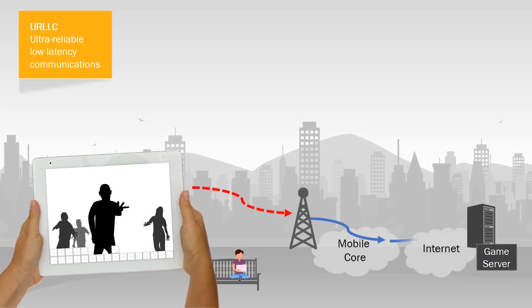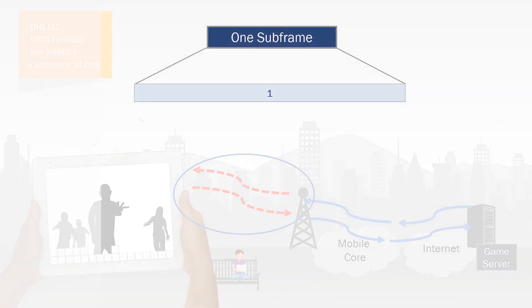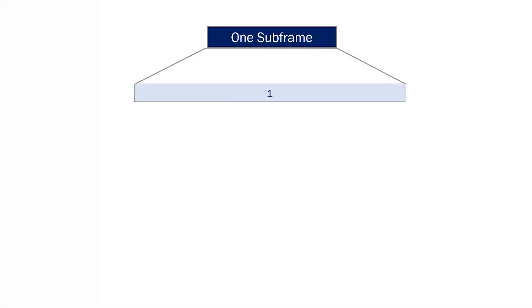The URLLC use case requires very low delay of information transmitted over the air. At higher frequencies, we can transmit the same amount of data in a shorter amount of time compared to lower frequencies. In 4G, the minimum transmission time is one millisecond for a specific amount of data.